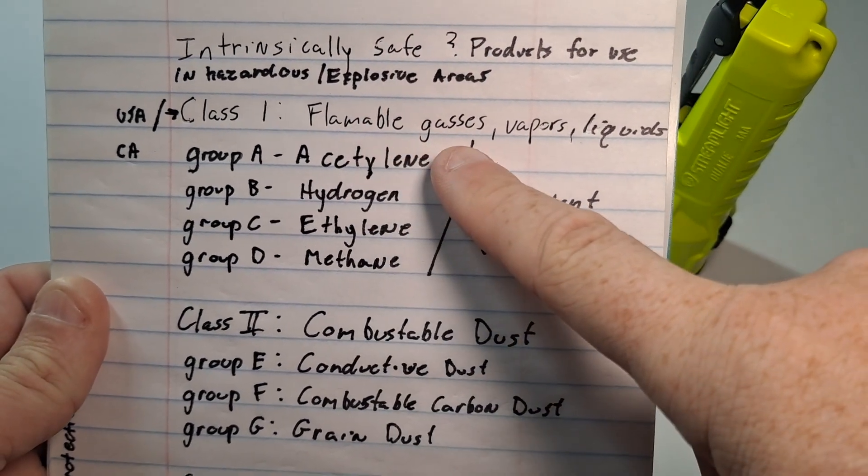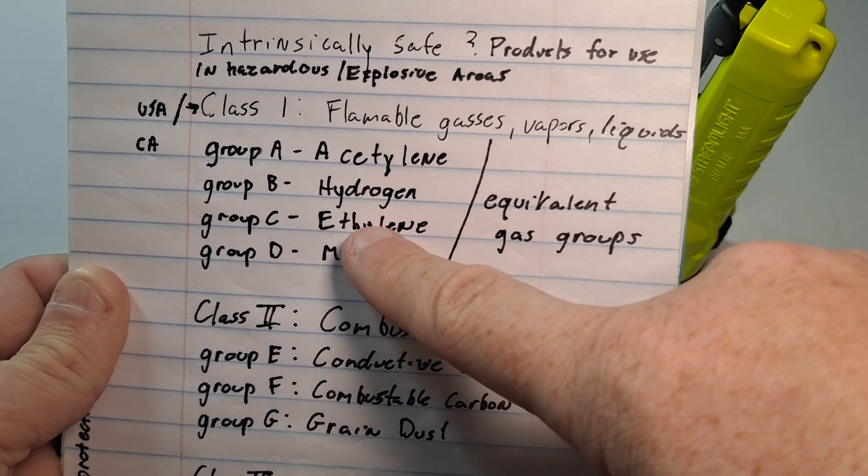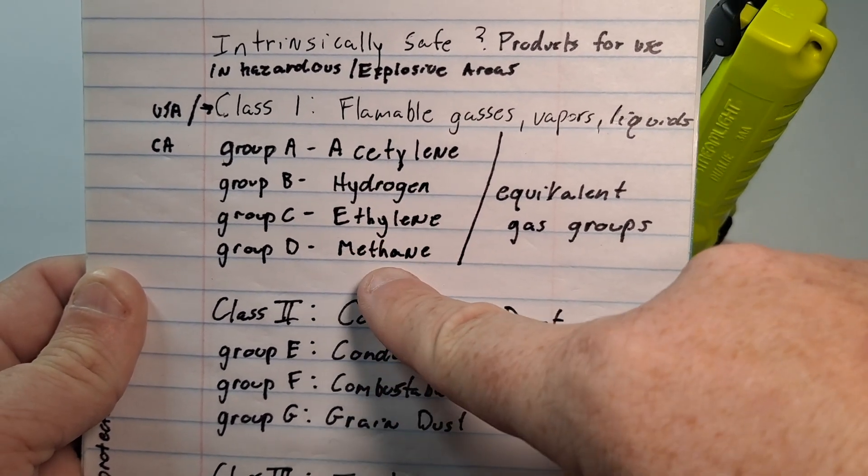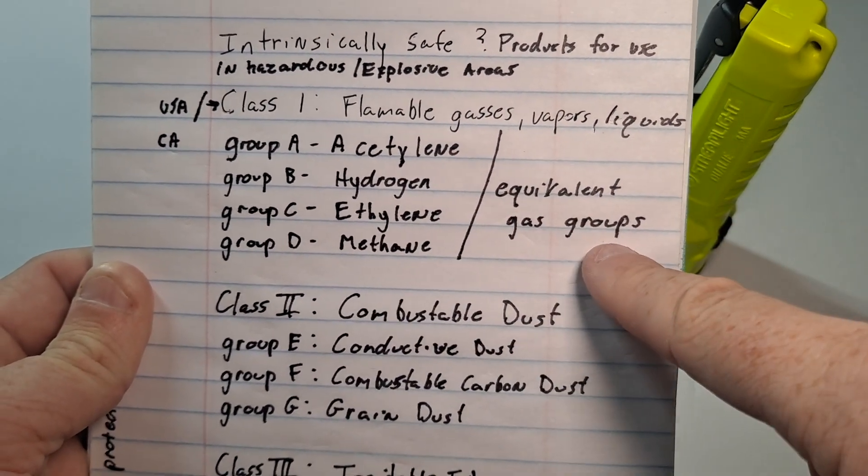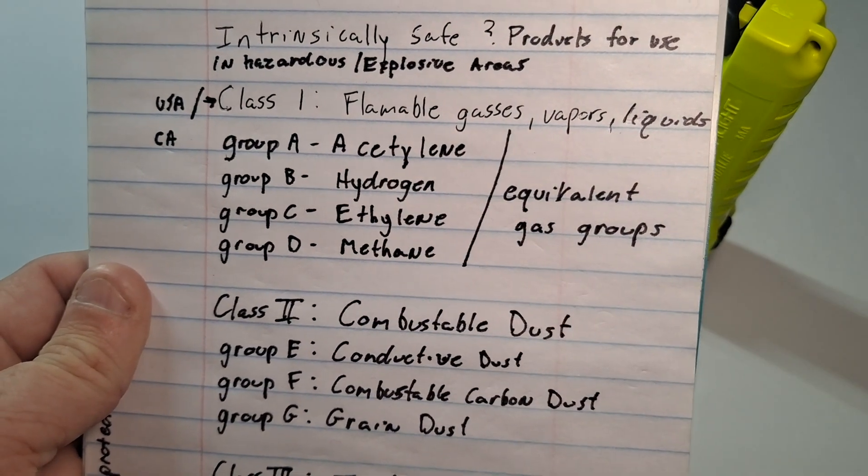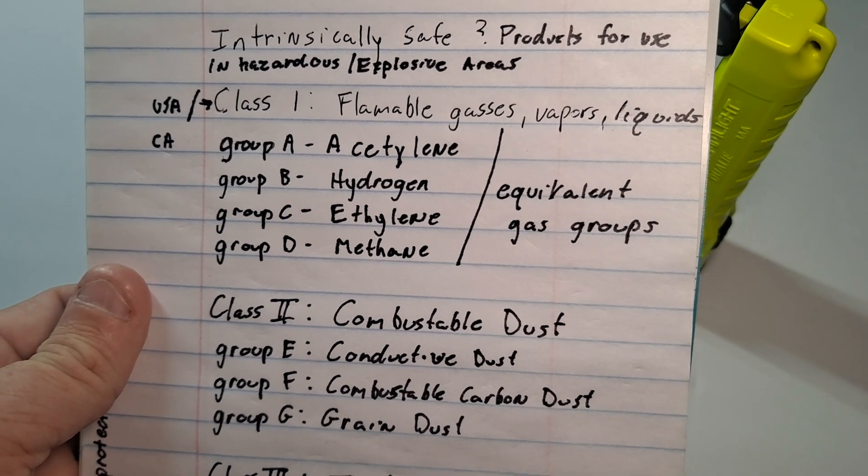Class one is flammable gases vapors and liquids. Group A is acetylene. Group B is hydrogen. Group C is ethylene and group D is methane. And for each of those groups an equivalent gas group. So whatever else is in the acetylene the hydrogens the ethylene anything that has those products in it could be a flammable gas vapor or liquid.